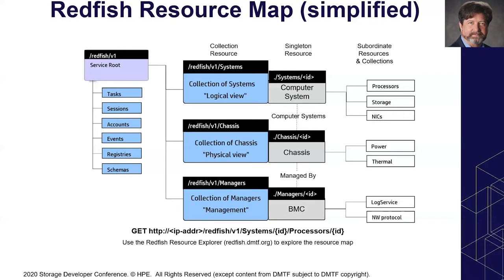Systems represent the processor, storage, and data plane view — a logical view. In a composable system, components may span different sheet metal or enclosures, so you want the same code to work regardless of physical arrangement. But you still need the sheet metal representation to understand power, thermal, and resiliency impact. The chassis model extends all of that to provide that level of functionality for clients.